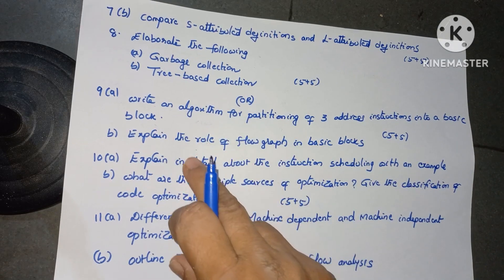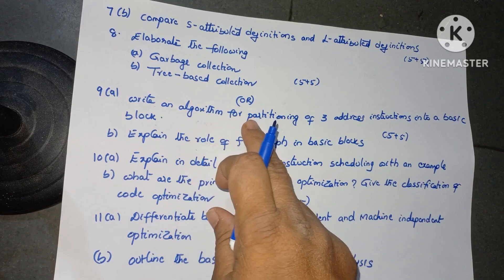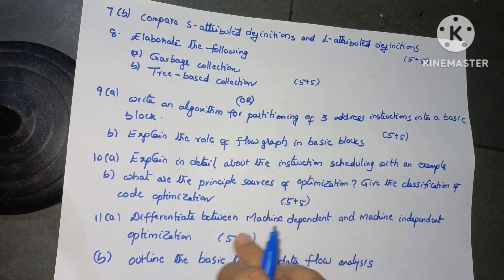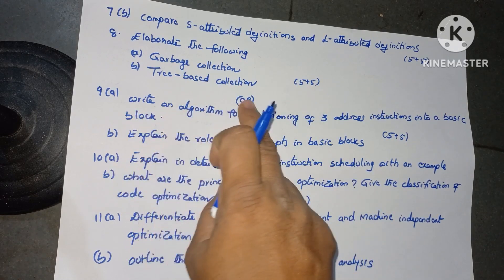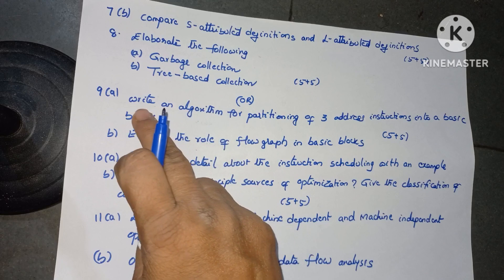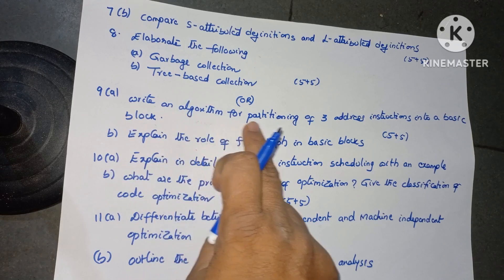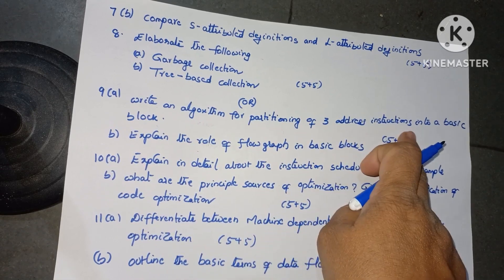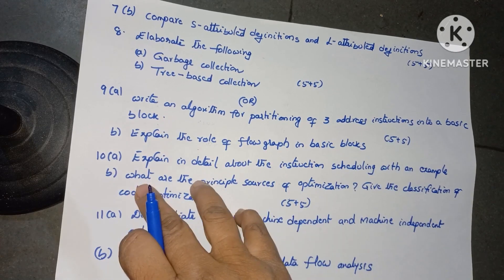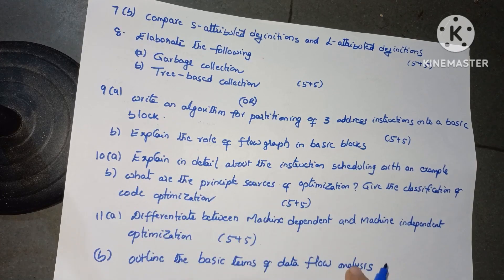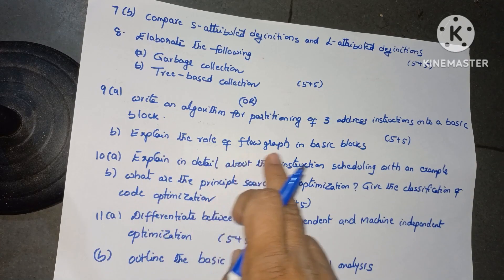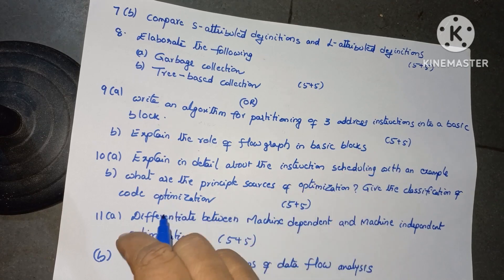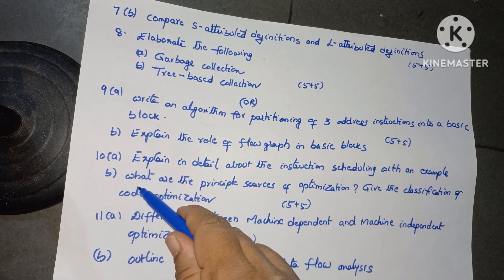Question 8: elaborate the following — A: garbage collection, B: tree-based collection, 5 plus 5 marks. Question 9A is internal choice: write an algorithm for partitioning of 3-address instructions into a basic block, 5 marks. B bit: explain the role of flow graph in basic blocks, 5 marks.